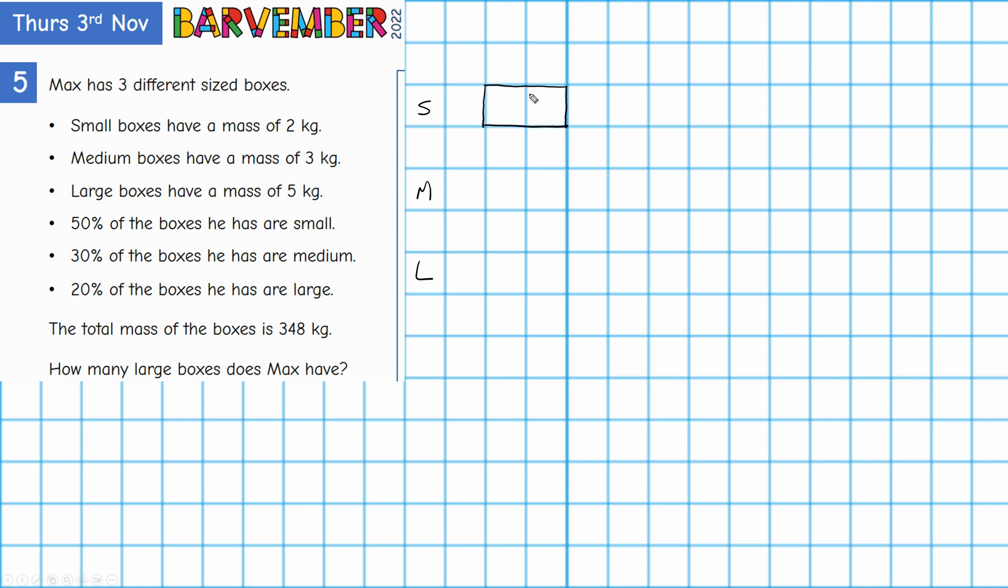So each part here represents one kilo to me. So this small box is two kilos. And how many do I want? Five. So that's one, two, three, four and five.